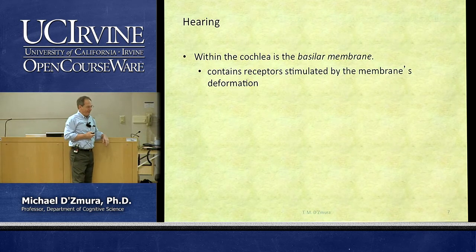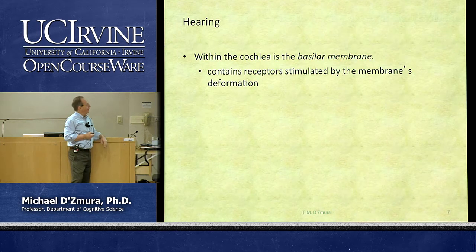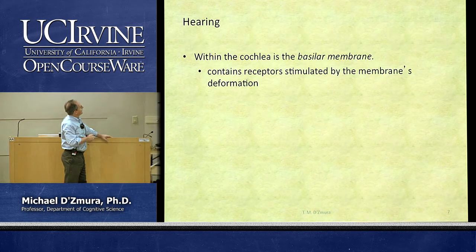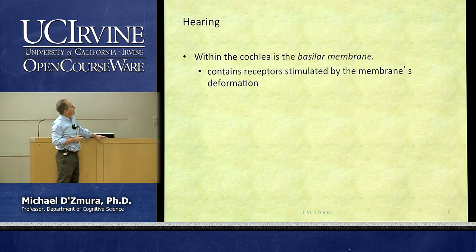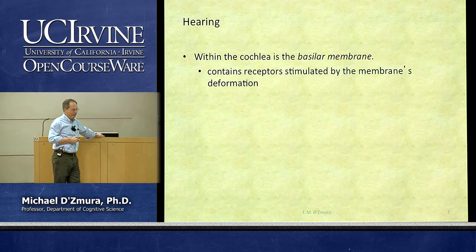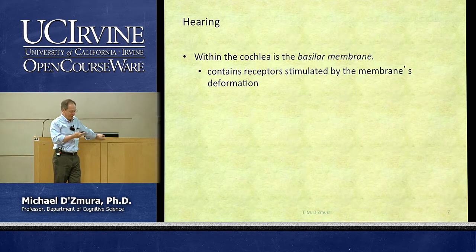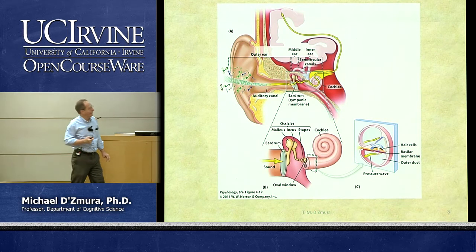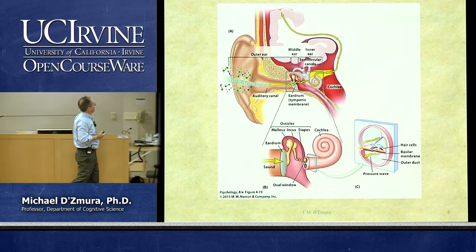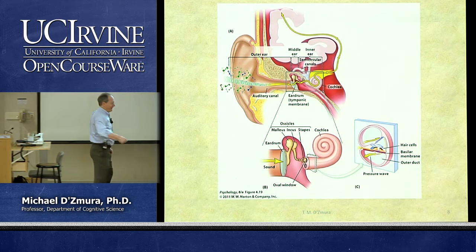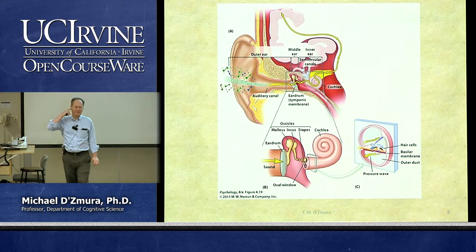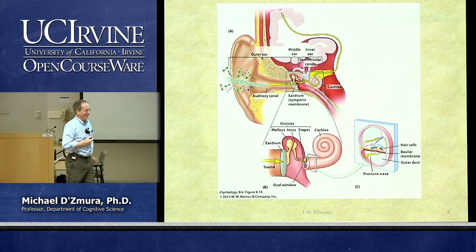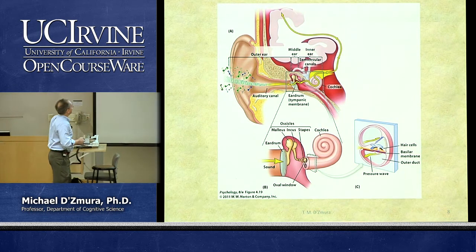We're now going to look at a little anatomy of the ear. We'll find that there is a structure called a basilar membrane within the cochlea, and this contains hair cell receptors effectively stimulated by sound pressure waves arriving at the ear. We'll spend several minutes on this diagram — there are two diagrams here, in fact. Are there going to be picture labeling questions on the final exam? Yes, there are. Hint, hint.